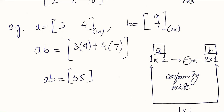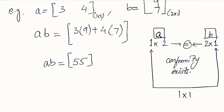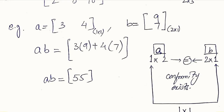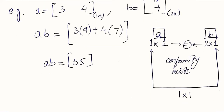In another example, we have a matrix of order 1×2 and another of order 2×1. Writing these orders together, the internal members are equal so conformity exists. The remaining outer digits tell us the order of the resultant matrix: 1×1. The first row [3, 4] is multiplied by the column [9, 7], giving 3×9 + 4×7. Since there is only one row and one column, there is only one term in the result: 3×9 + 4×7 = 55. The result is 1×1.